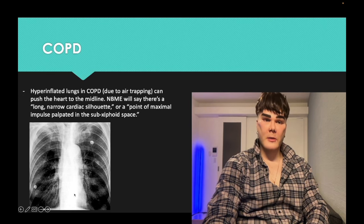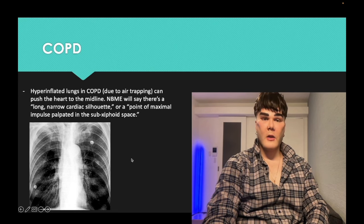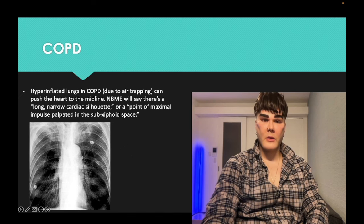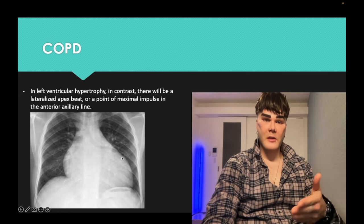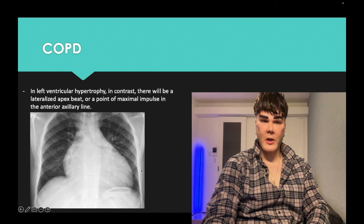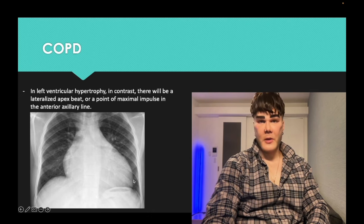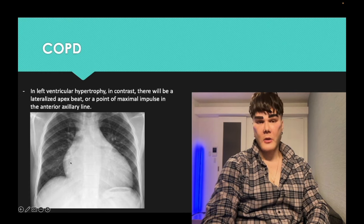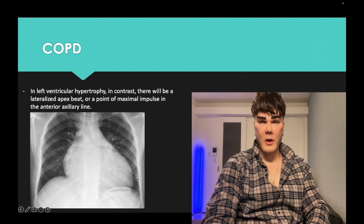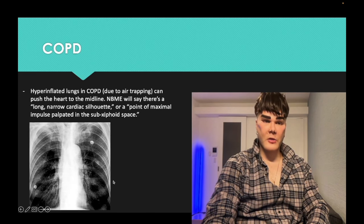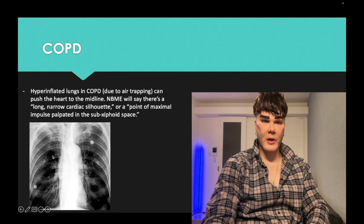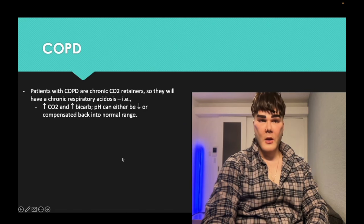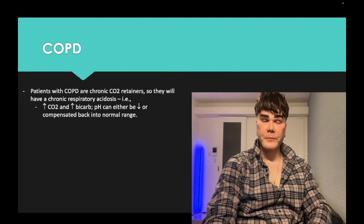Hyperinflated lungs push the heart to the midline, causing what's called a vertical heart or long narrow cardiac silhouette. The point of maximal impulse is palpated in the sub-xiphoid space — high-yield finding for COPD. In contrast, left ventricular hypertrophy shows an enlarged cardiac silhouette with the left ventricle lateralized, with PMI in the anterior axillary line. COPD patients are also chronic CO2 retainers, so CO2 is elevated and bicarb goes up — chronic respiratory acidosis.